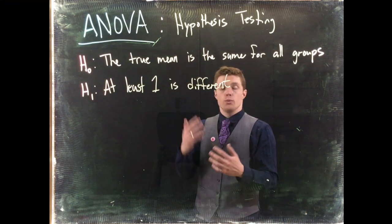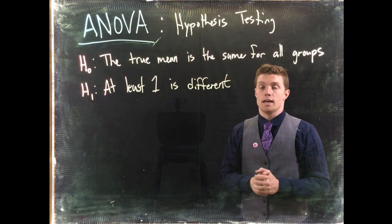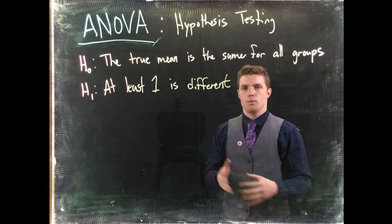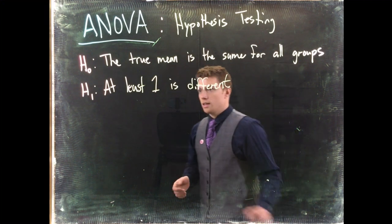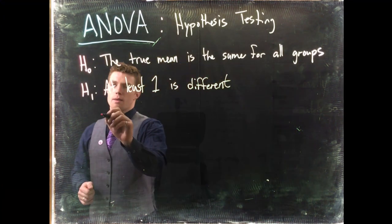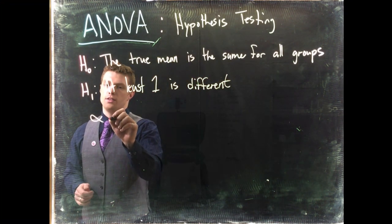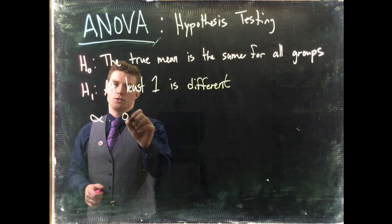So we can go through and we can actually run our ANOVA test and we can take our data, we can put it into our software. And once again, we still are going to have some alpha value. So let's say that for this example, alpha would be 0.05.